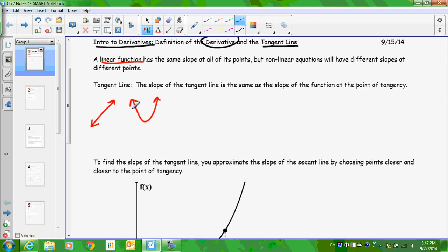So right here, the slope is negative. We'll say negative 5, negative 4, negative 3. And then right there, we get down to slope of 0, and then we have a positive slope. Okay, so there's different slopes at different points.